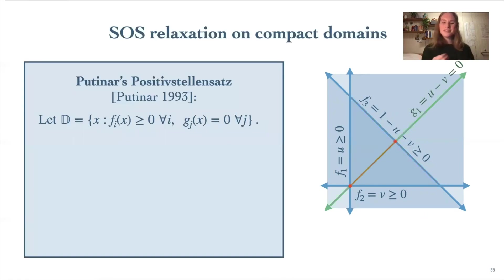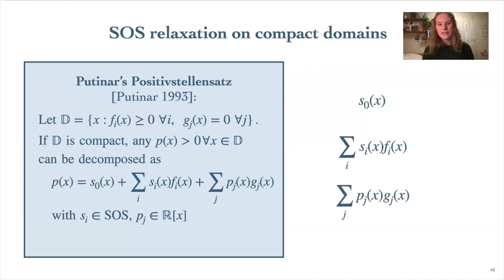Now that we've defined our notion of domains, we can move on to talking about the central result of SOS relaxation on compact domains, a theorem integral to solving our patch problems, which is Putinar's Positivstellensatz. That's German roughly for a positive location theorem, so you might already have an inkling of what this is going to do. With our domain defined as before and the additional constraint that the domain is compact, the Positivstellensatz tells us something about how you can decompose any polynomial positive over the domain, kind of in a similar vein to how we decompose a polynomial into a sum of squared polynomials in the previous section.